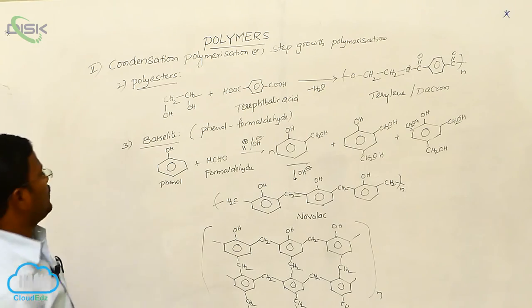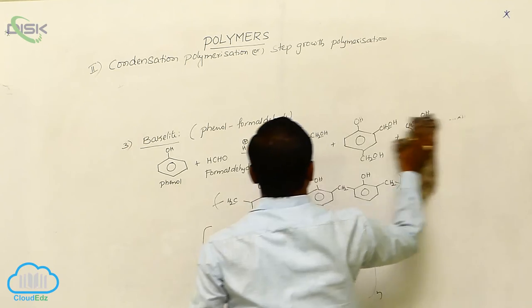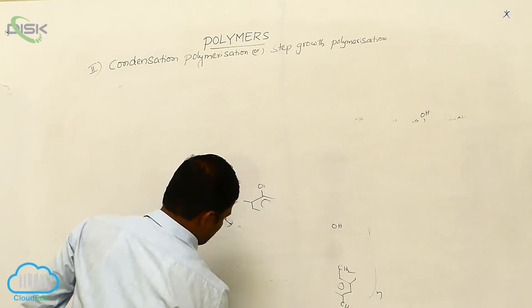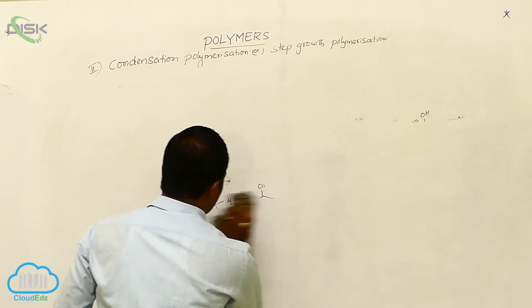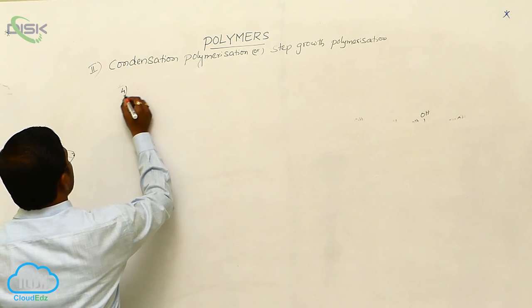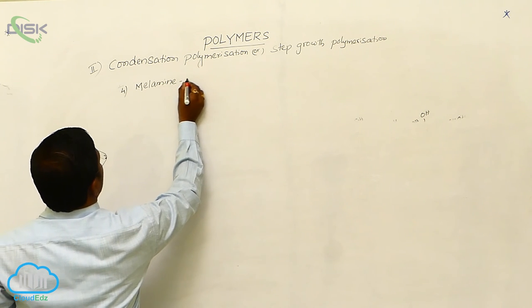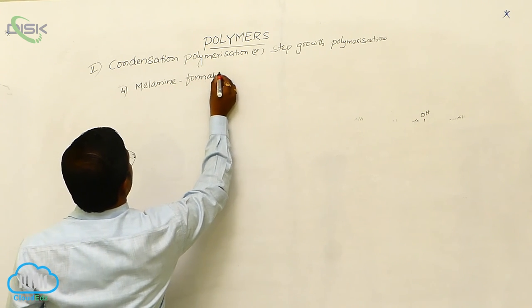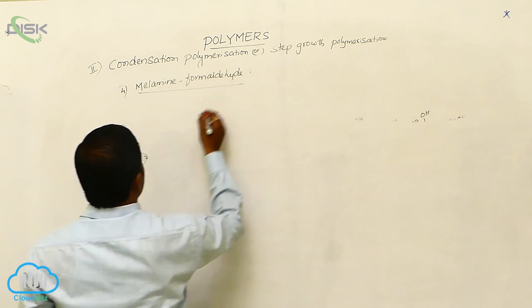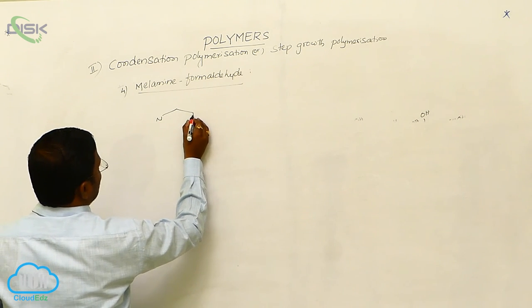Let us have one more example which explains condensation polymerization. That is melamine formaldehyde reaction. What is melamine formaldehyde reaction? When 1,3,5...